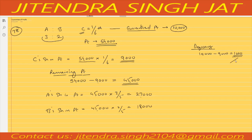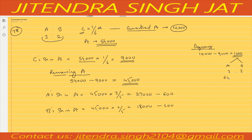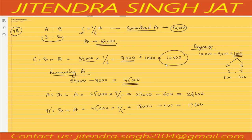Since nothing is mentioned in the question about who covers the deficiency, this 1,000 is given by A and B in their profit sharing ratio of 3 to 2. So 600 A will give and 400 B will give. Therefore A's share is 26,400, B's share is 17,600, and C's share is 10,000.